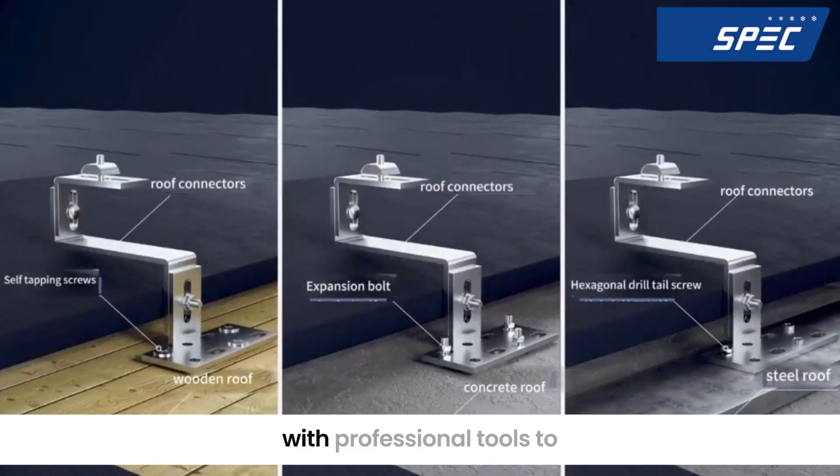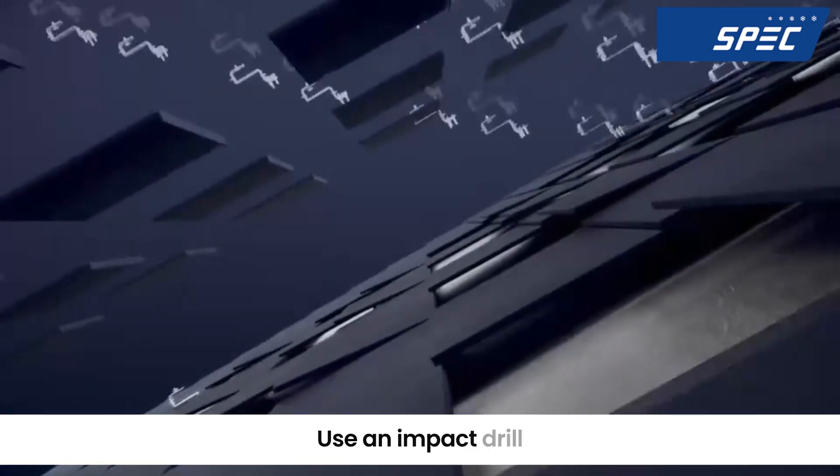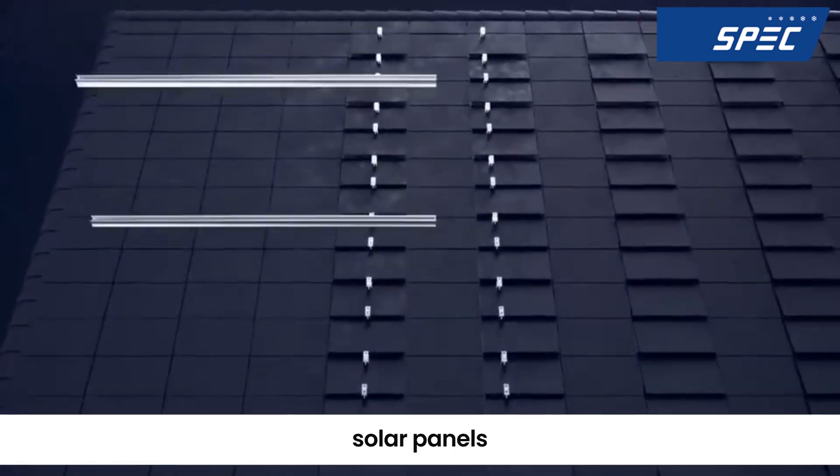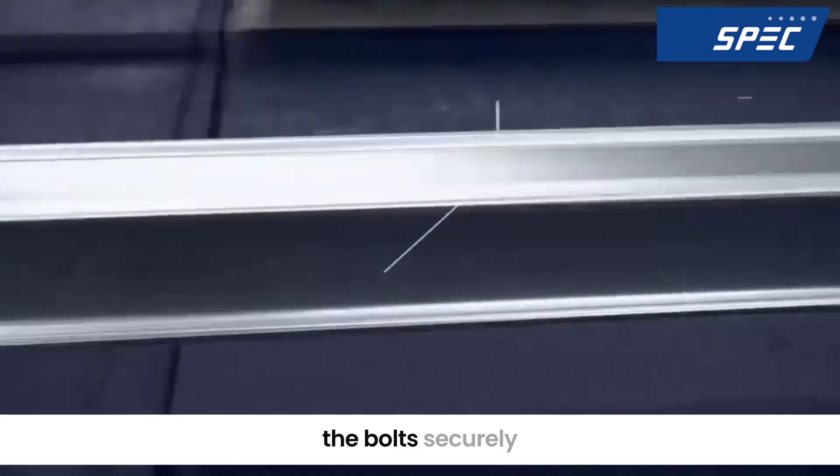Begin by lifting tiles with professional tools to determine the punch position. Use an impact drill to drill holes for the installation of roof solar panels. Insert expansion bolts and install hooks to fix the bolts securely.